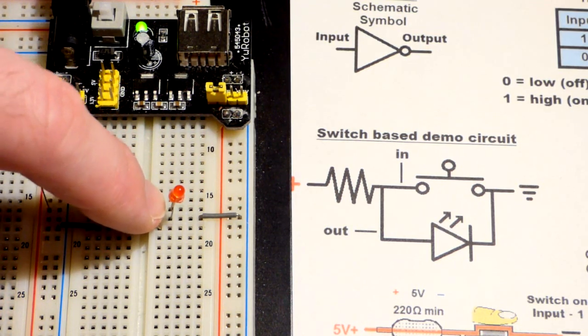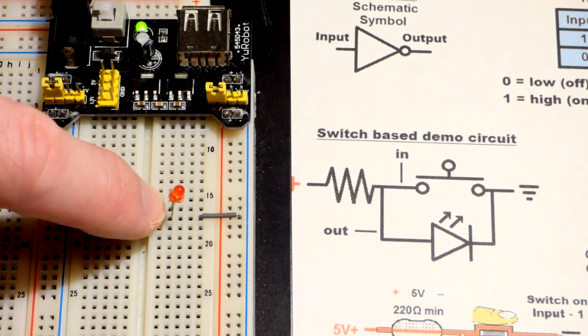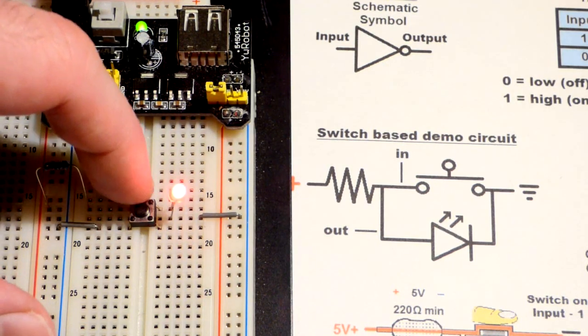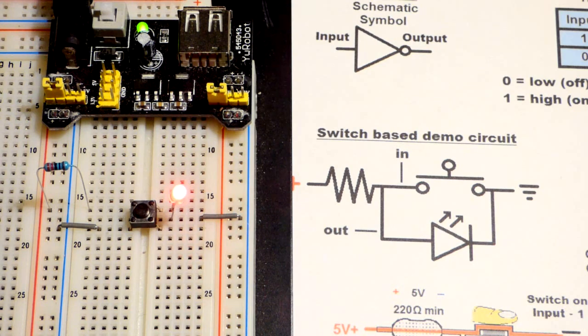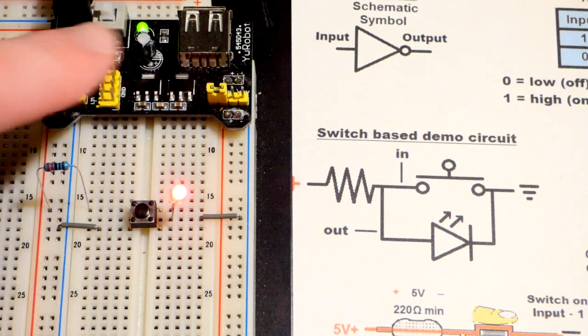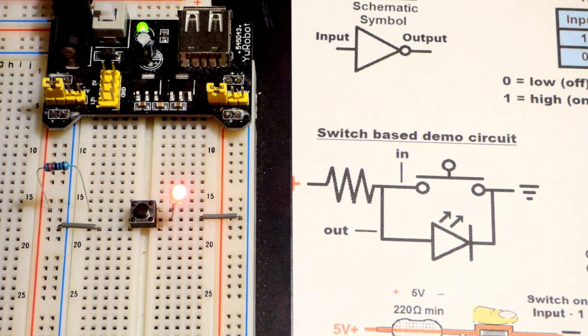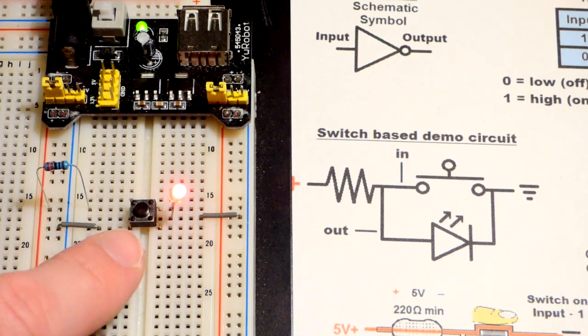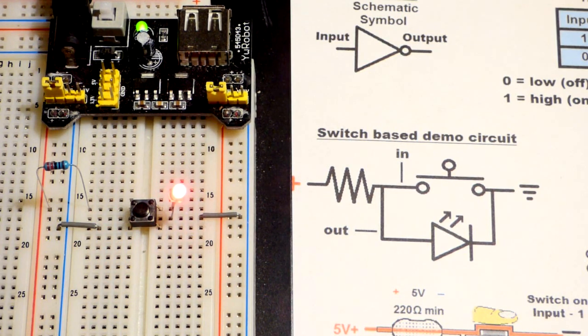When I close the switch, the switch is considered on. It's passing current, but now the output, the LED, is not on. So we inverted the signal. Now remember, inverters are commonly used to talk about taking direct current and turning it into alternating current, just like the household. So this is a different kind of inverter. It's a signal inverter, not a power inverter.